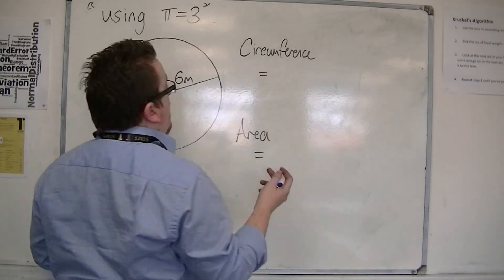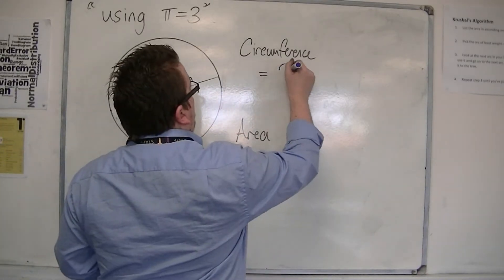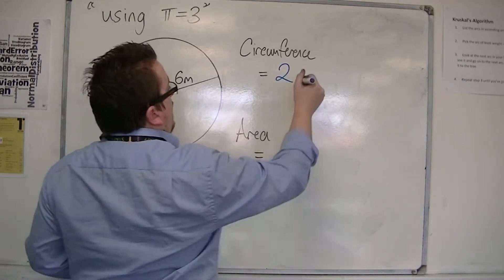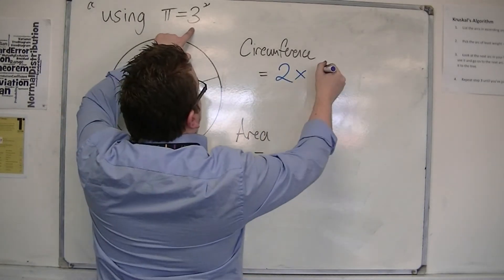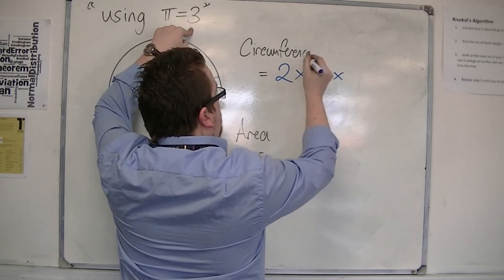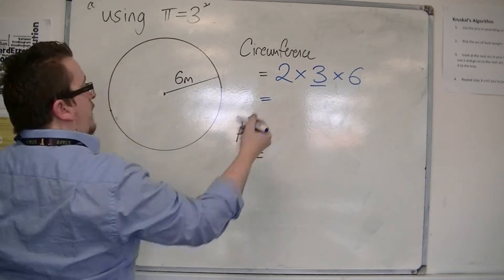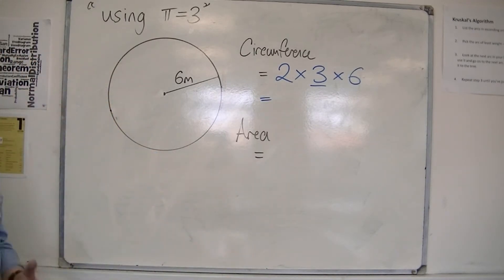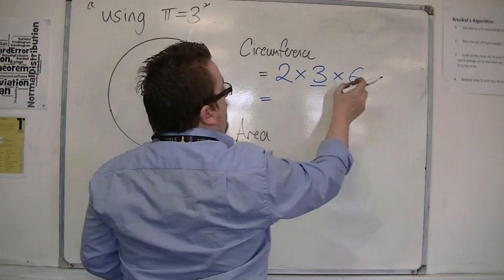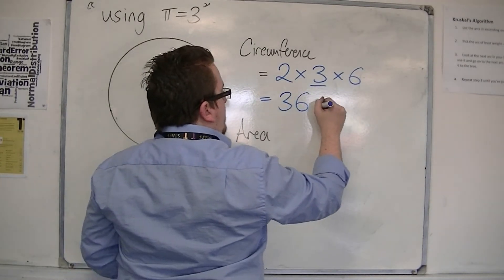So for the circumference, remember it's 2 times pi times r. Now we've got r is 6, and we're going to use pi as being 3. So 3 is going to be my replacement. So 2 times pi times r, 6. So 2 times 3 times 6 is 6 times 6, that's 36 centimeters.